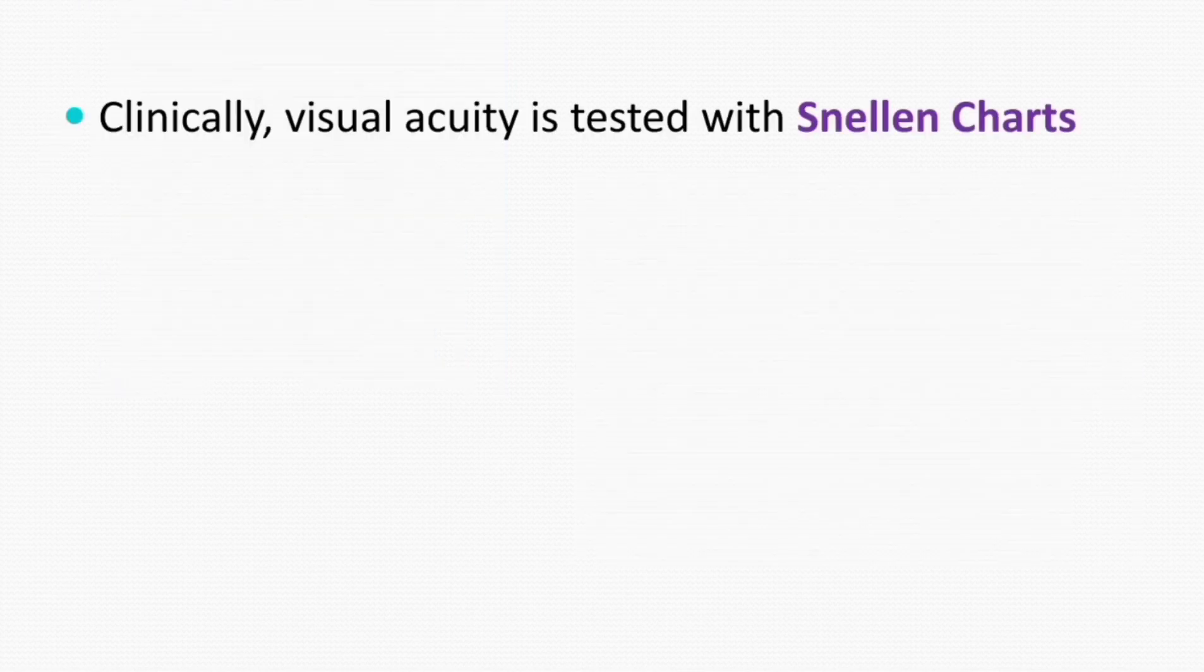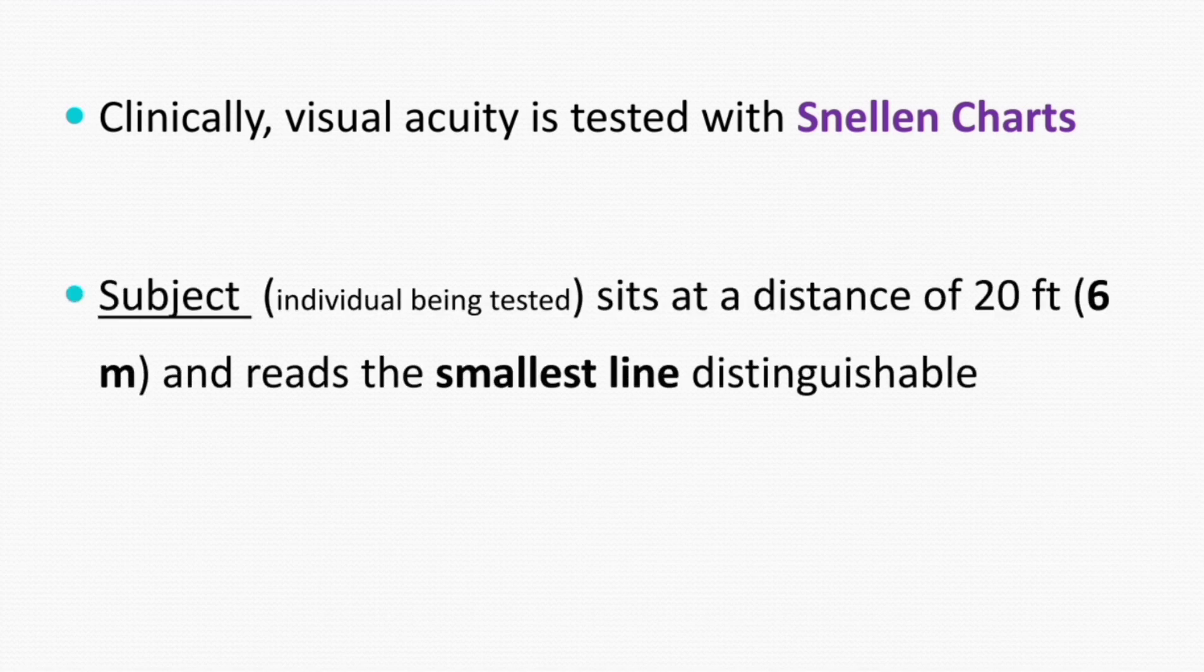Now we can test the visual acuity, and the chart which is used to test the visual acuity is called Snellen chart. With the help of Snellen chart we can test the visual acuity. In this we make the subject sit at a distance of about 6 meters or 20 feet from the Snellen chart, and then the subject reads out the smallest line which he can.